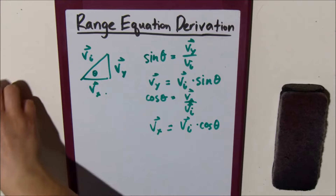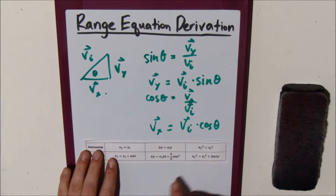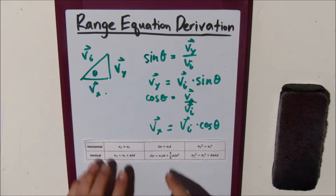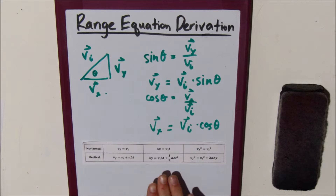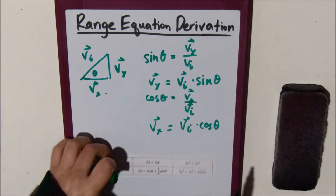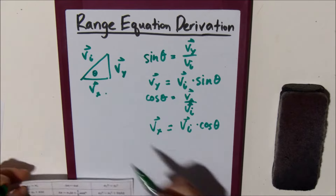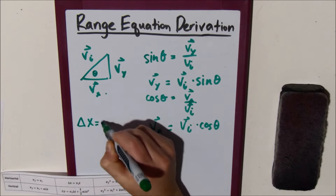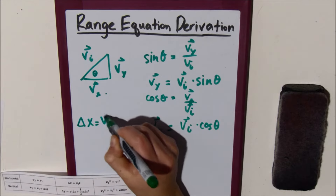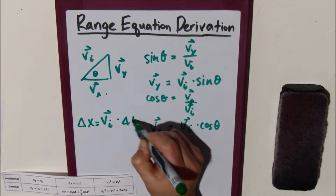Now we're going to use the middle column of the horizontal and vertical equations to solve for our range equation. The horizontal equation is delta x equals v initial times delta t.